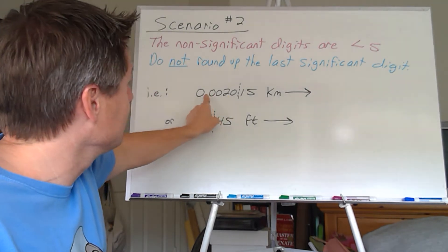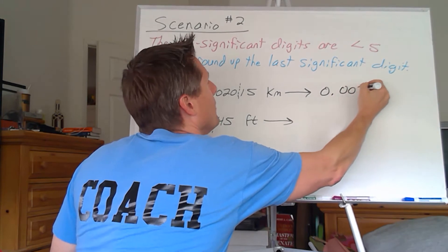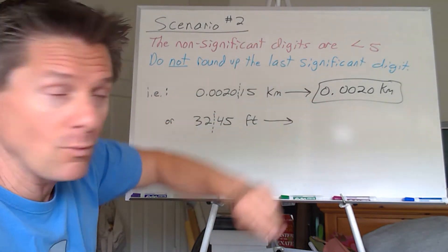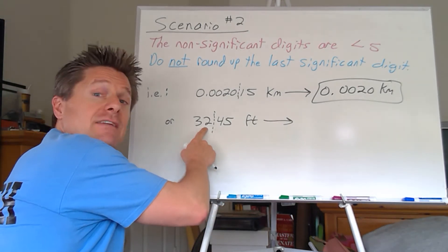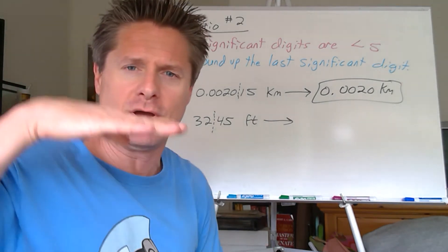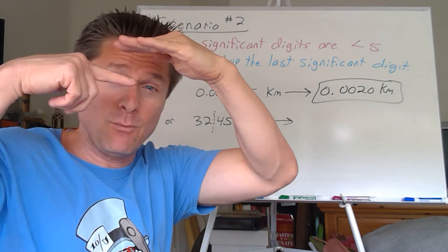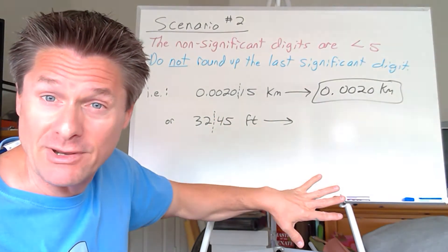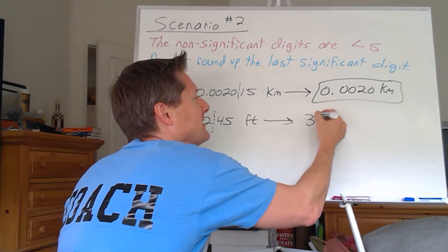The non-significant digits are 15, which is less than five, so it's closer to 0.0020 than to 0.0021 — we do not round that up; it stays as 0.0020. Another example: 3245 feet, good to two significant digits. Do we leave the 2 or round it to a 3? Halfway would be 3250, but we're at 3245 — less than halfway — so it's closer to 3200. The non-significant digits are less than five, so we do not round up: 3200 feet.